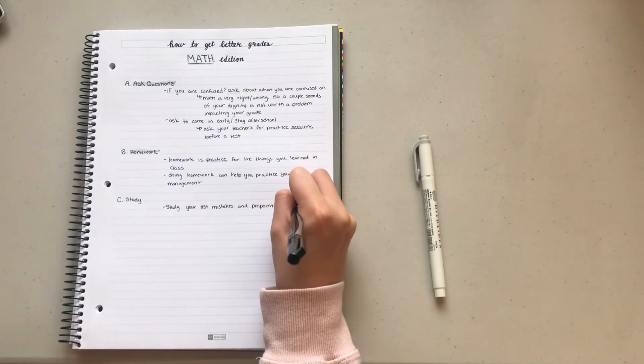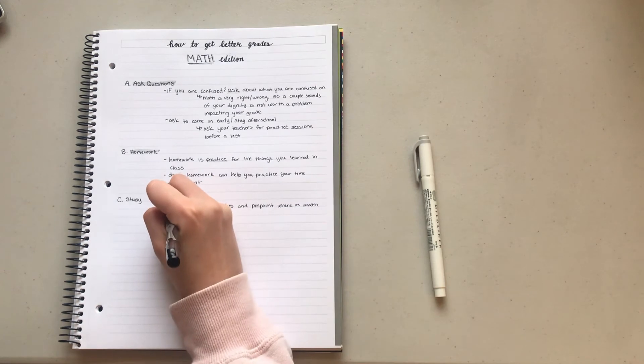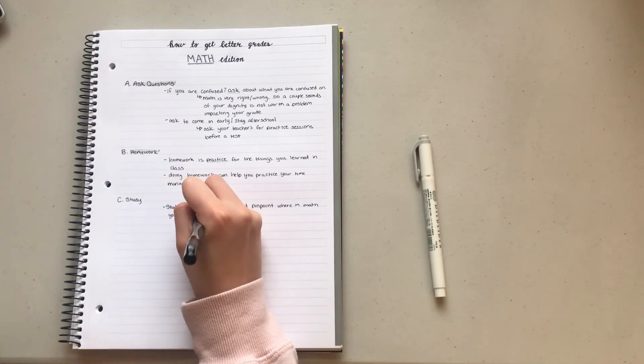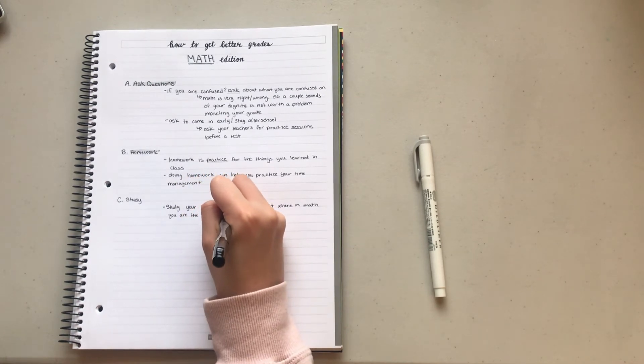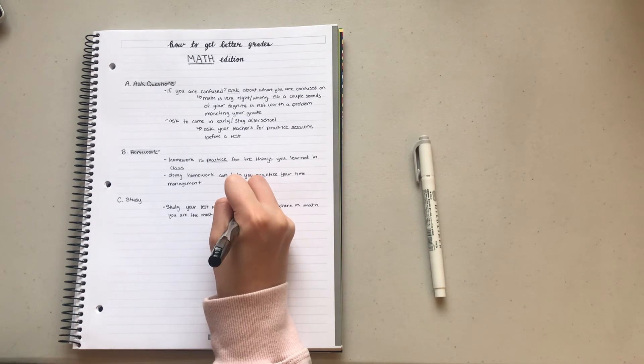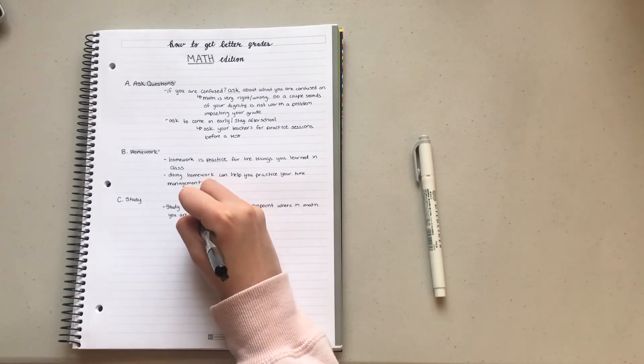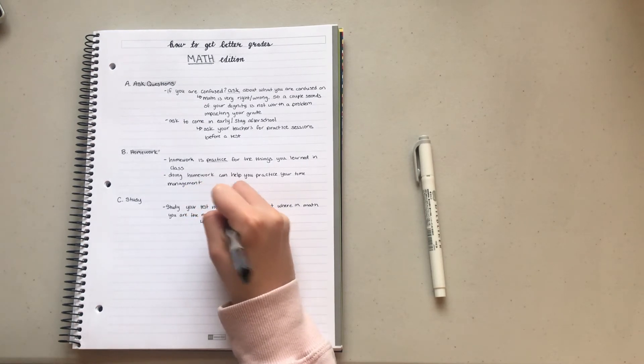Pinpoint where in math, or what concepts, or what type of problems make you the most vulnerable—the ones that usually you get points off on. I usually do this once I get a test back, so when the teacher hands a test back to me, I will look over at all the red pen marks, and then once I get home I'll correct them on a sheet of paper.